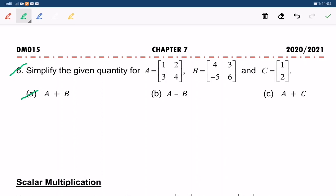A plus B means 1, 2, 3, 4 plus 4, 3, negative 5, 6.